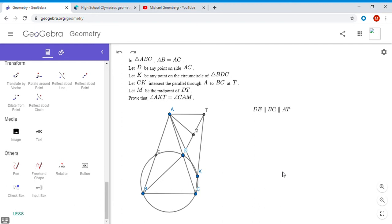The next step that I wanted to go through here is we want to use that M is the midpoint of DT. So how do we use that fact? One way to use it is that you can complete a parallelogram, because the diagonals of a parallelogram bisect each other.